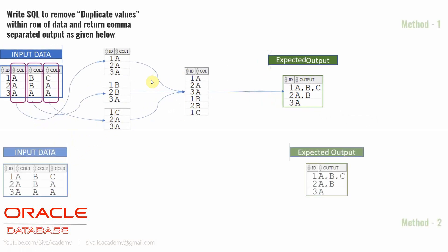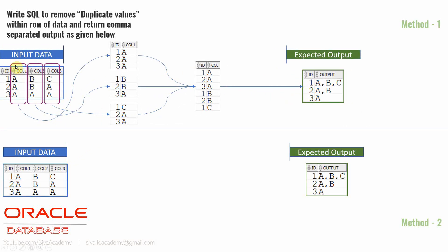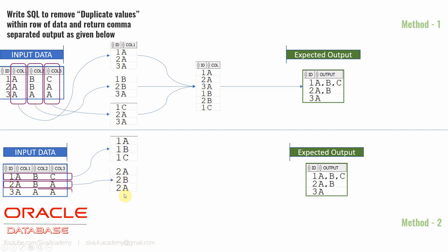Now let's see one more method of implementation. In the first method we split columns into three different queries, combined the output, removed duplicates, then did the aggregation. In this second approach, slightly different — I'm starting with the row. We convert the row into multiple rows of data, like 1A, 1B, 1C for row one; 2A, 2B, 2A for row two; and 3A, 3A, 3A for row three. The remaining logic is the same: we combine the data, remove the duplicate, then use list aggregation to produce the comma-separated output.